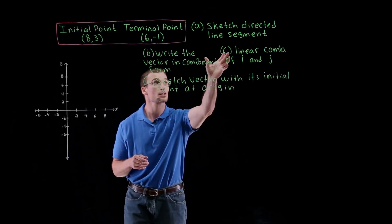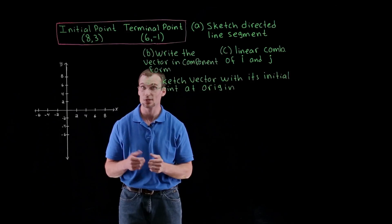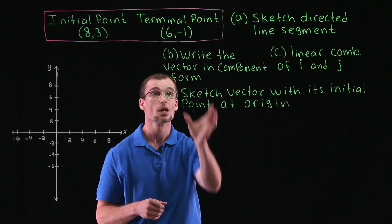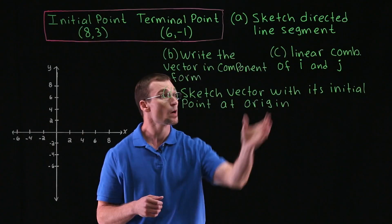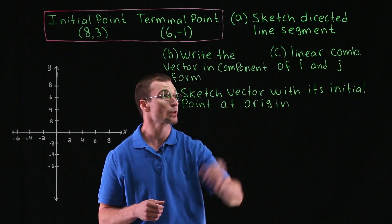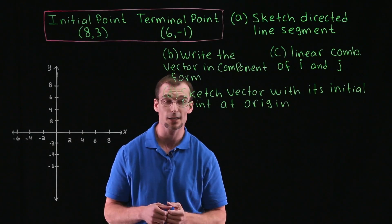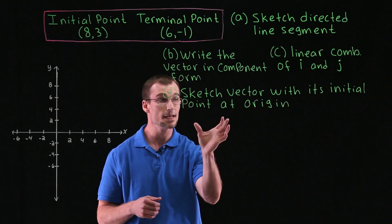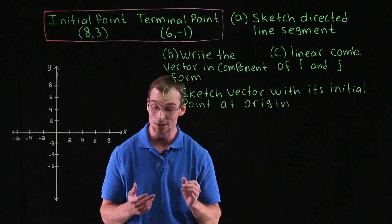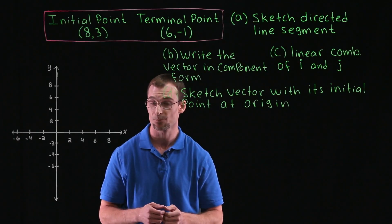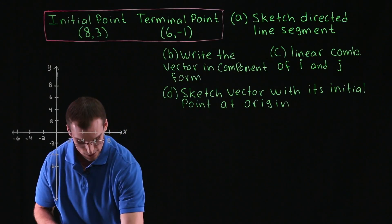Part A: we're going to start by sketching the directed line segment representing the vector. Part B: we're going to write the vector in component form. Part C: we're going to write the vector as a linear combination of our unit vectors i and j. And Part D: we're going to sketch the vector with its initial point at the origin.